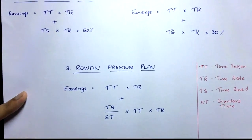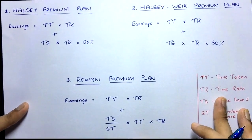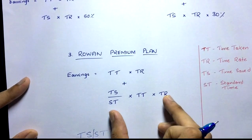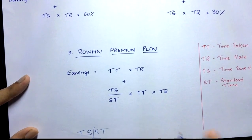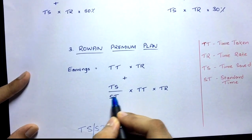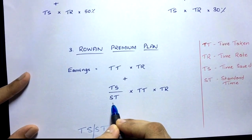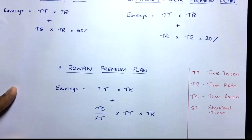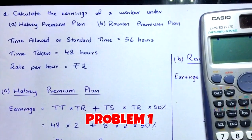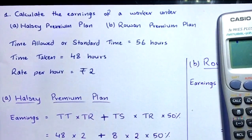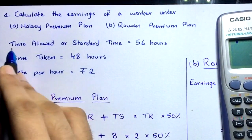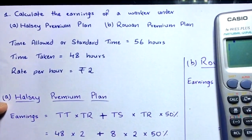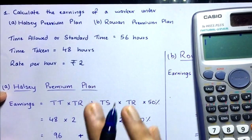Once we solve the problems you'll find these formulas very easy. Just be careful with the Rowan formula — it's easy to accidentally swap Standard Time and Time Saved. The mnemonic TSST will prevent that. Now here's a simple problem: calculate the earnings of a worker under Halsey Premium Plan and Rowan Premium Plan. Given: Standard Time = 56 hours, Time Taken = 48 hours, Rate per hour = ₹2.